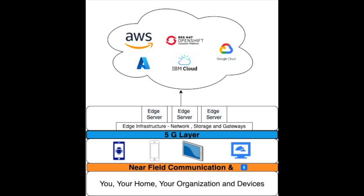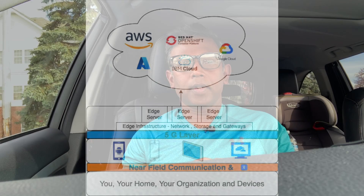When devices are connected to internet-connected devices and communicate data, those internet-connected devices use 5G technology to pass the data to the edge architecture. The edge architecture is built with edge servers and an edge network. After receiving all the data from the internet-connected devices, the edge server or edge infrastructure communicates to the public clouds.